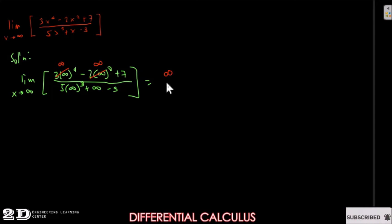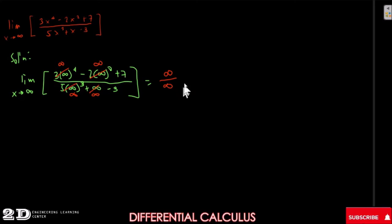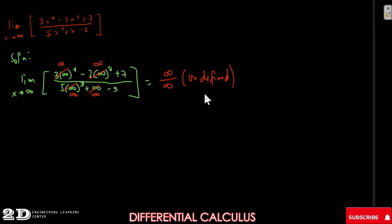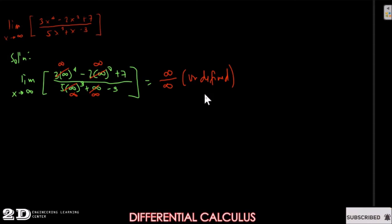We cannot say infinity minus infinity equals zero because we don't know which infinity is larger. So we treat the numerator as infinity, and the denominator is also infinity. We get infinity over infinity, which is undefined. So we cannot solve this directly using algebra — we will go directly to L'Hôpital's Rule.